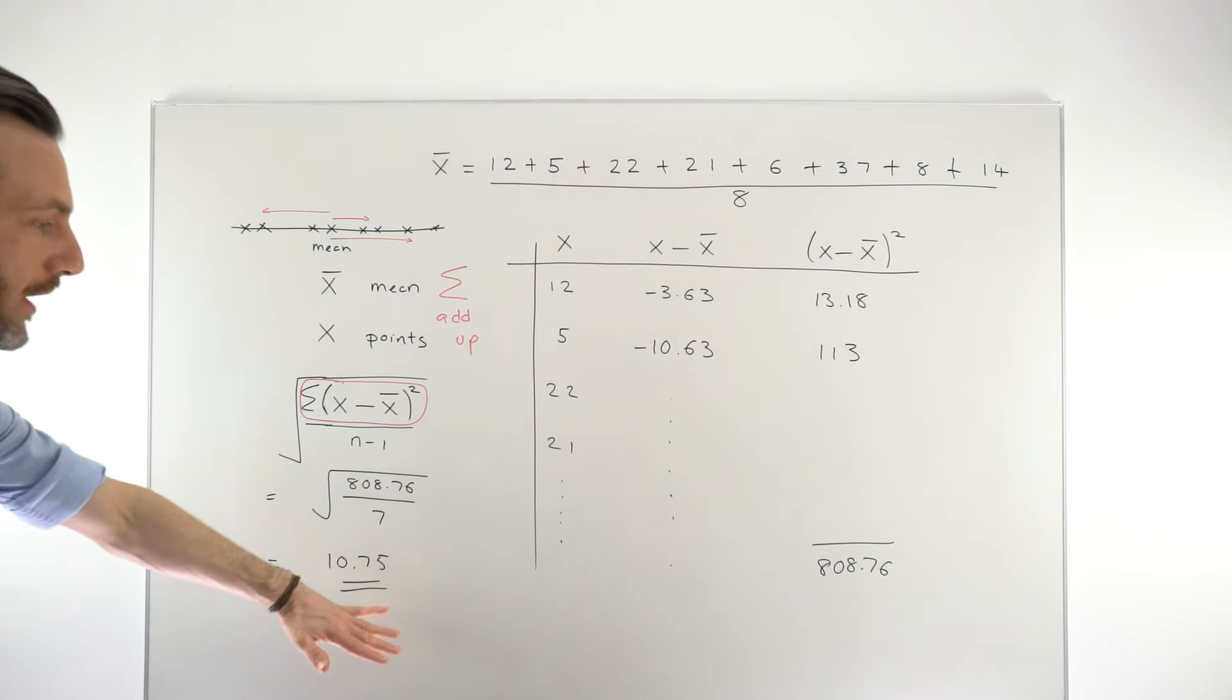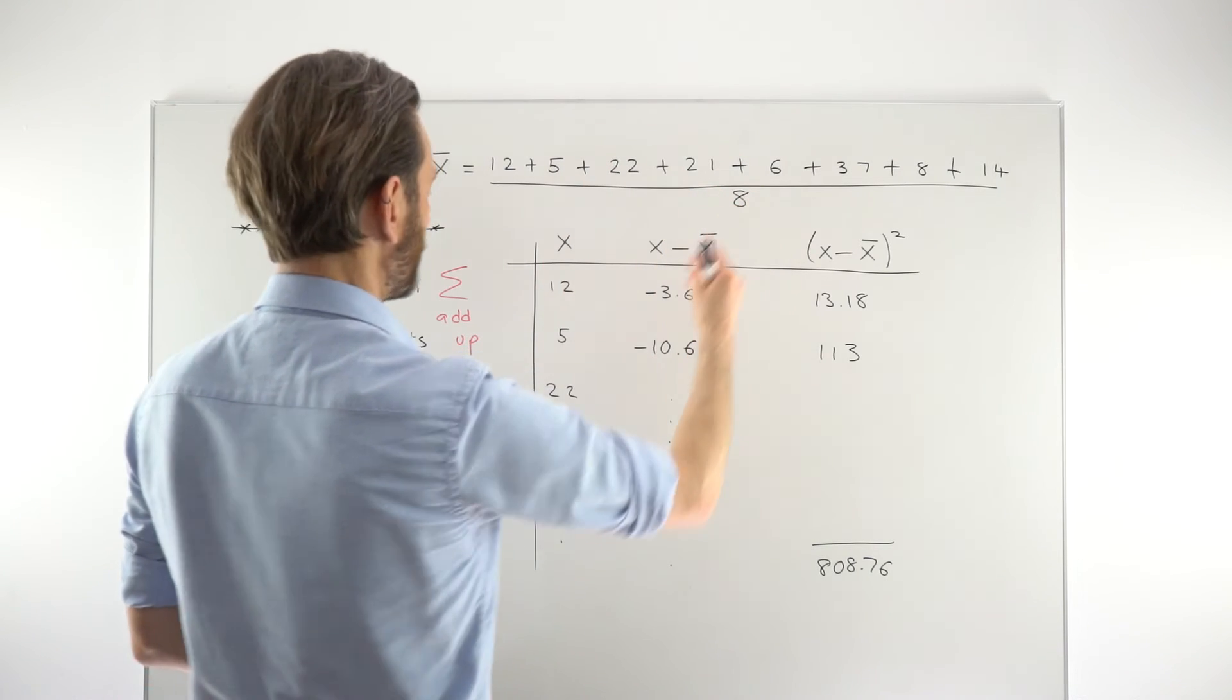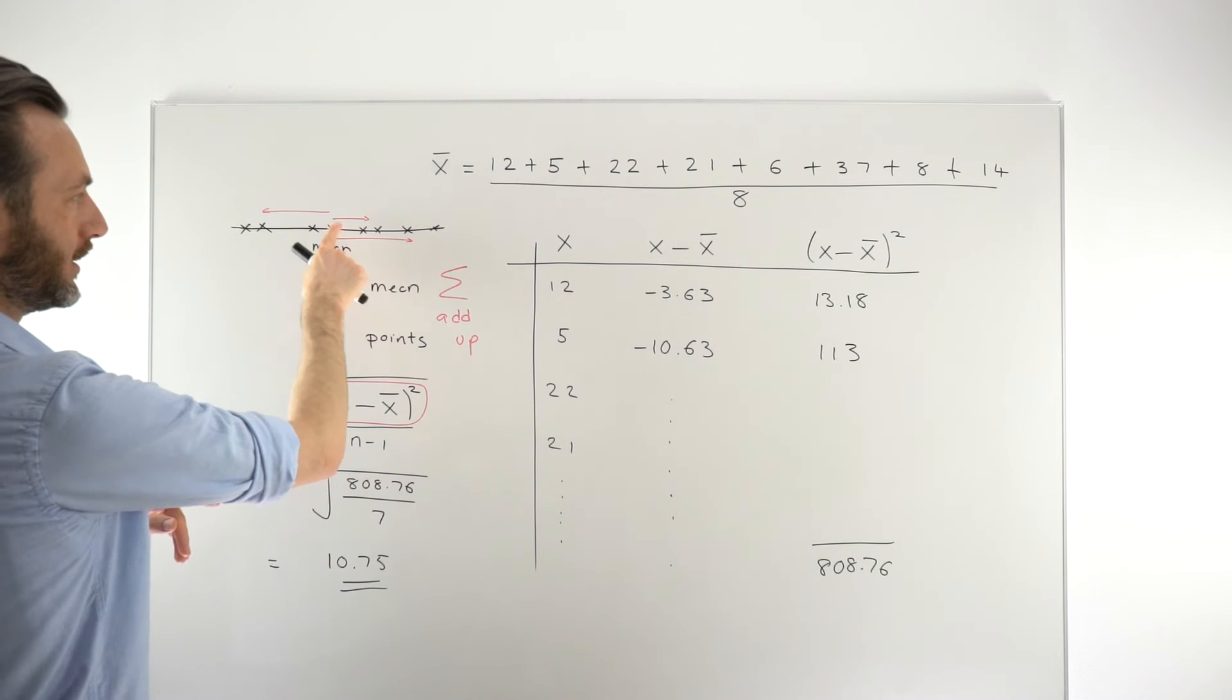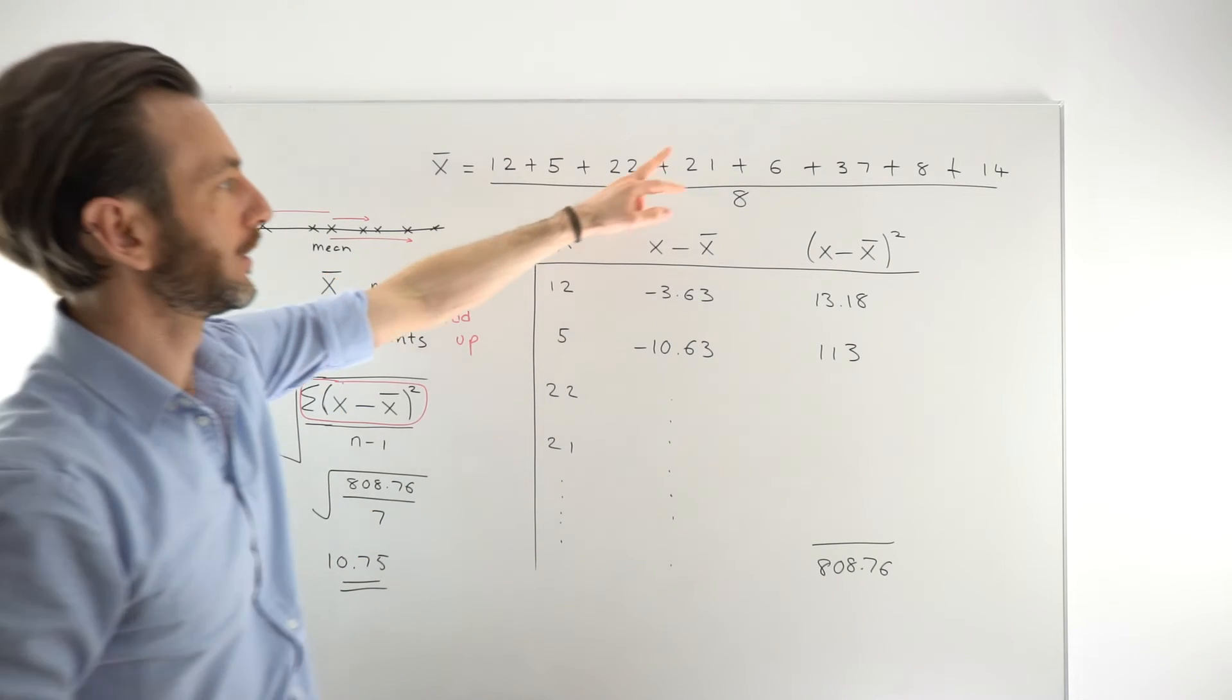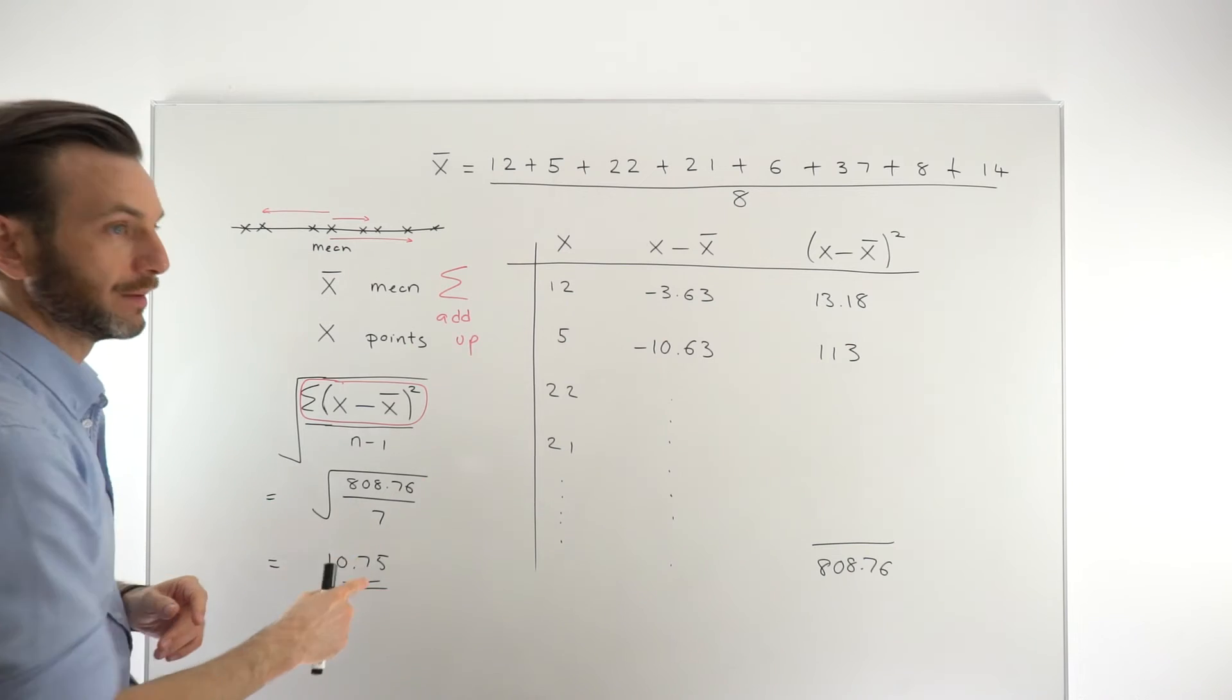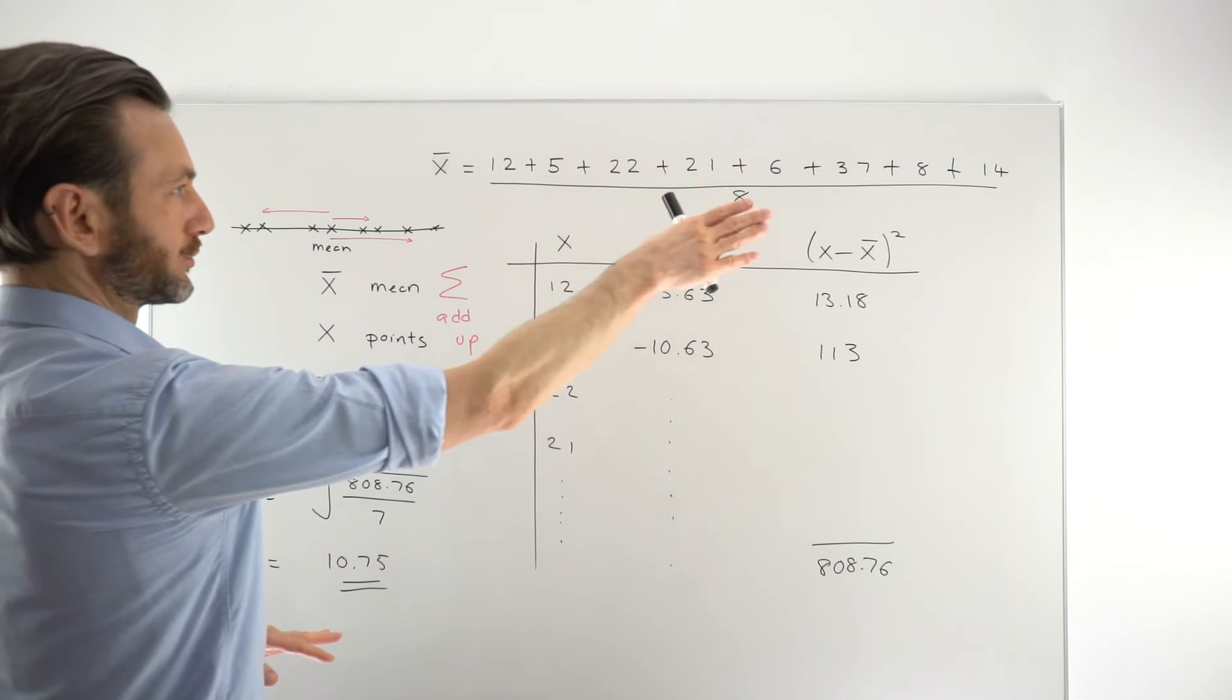So the number itself, 10.75, doesn't really tell you that much about the data set. What it does tell you, though, is that on average, each of the data points is 10.75 from the mean. So it's averaging these red line distances, if you like. So on its own, that doesn't really tell you anything, because if these were really large numbers or really small numbers, then the size of this number would be based on the context of those large or small numbers, but it can tell you the same story regardless of how big or small the numbers are.